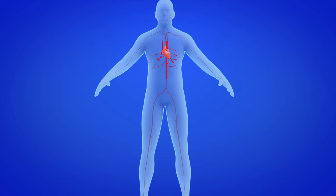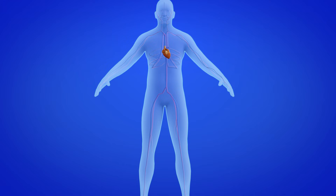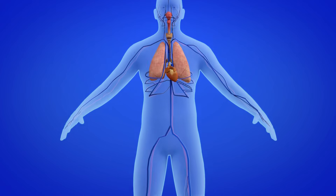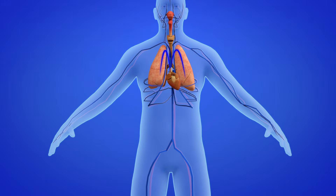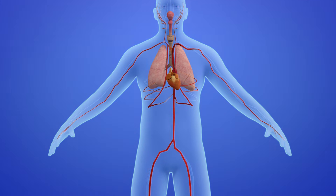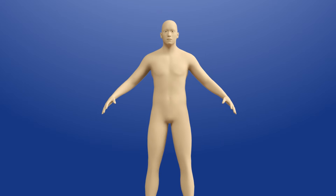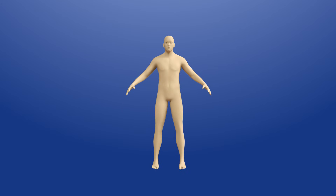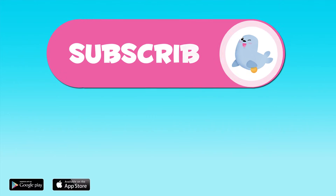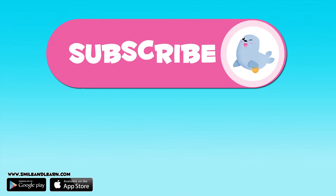Oxygenated blood passes through the heart and is pumped into the organs through the arteries. The organs receive the oxygenated blood and return it without oxygen but with waste, which goes back to the heart, which then pumps it to the lungs where it picks up oxygen and expels the waste.